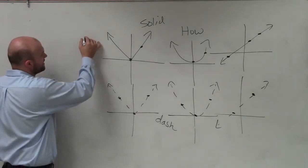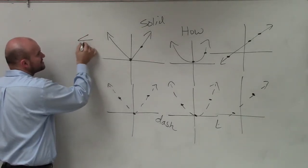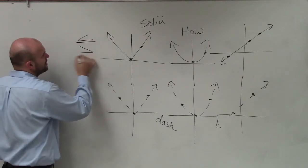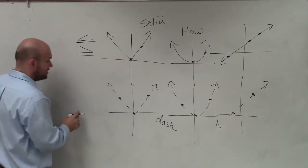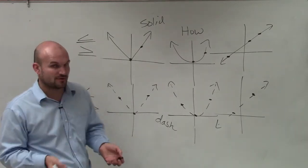So whenever you have an inequality that starts with y, or it's y is less than or equal to or greater than or equal to, it's going to be a solid graph. Whenever you have one that's less than or greater than, it's going to be a dashed graph.